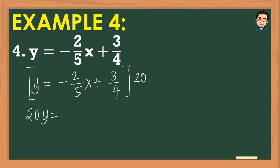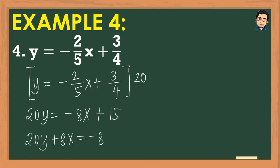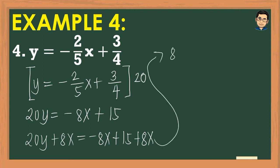For ¾ × 20: the GCF of 4 and 20 is 4, so 20 becomes 5, giving us 3 × 5 = +15. Now we have 20y = -8x + 15. We transfer -8x to the left side by adding 8x to both sides: 20y + 8x = 15. Rewriting, 8x + 20y = 15. This is our final answer.